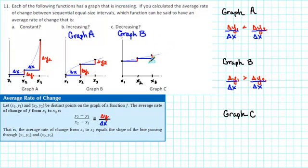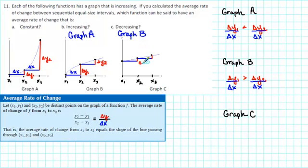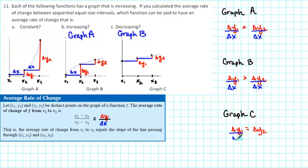Finally, for Graph C, we notice that delta y1 and delta y2 appear to be the same. So we write delta y1 is equal to delta y2. To get the average rate of change, we divide by delta x. We can see that the first average rate of change is equal to the second average rate of change. That indicates that the average rate of change is constant. So answer A corresponds with Graph C.